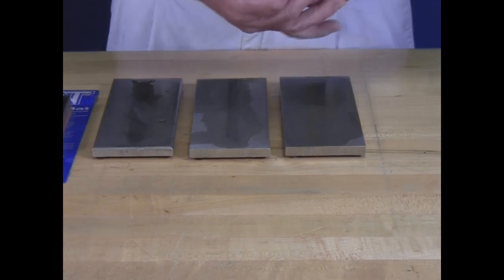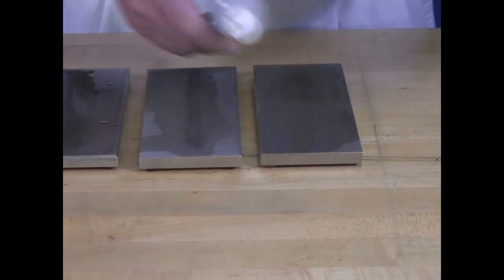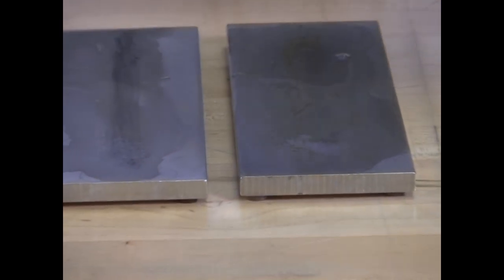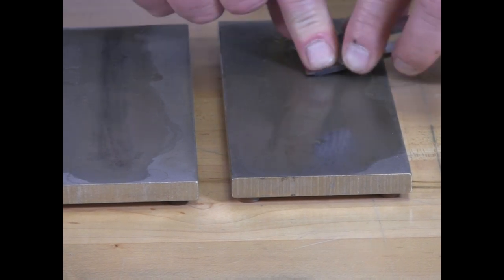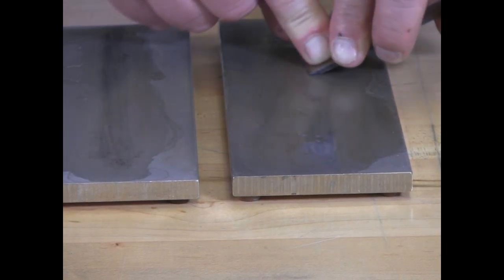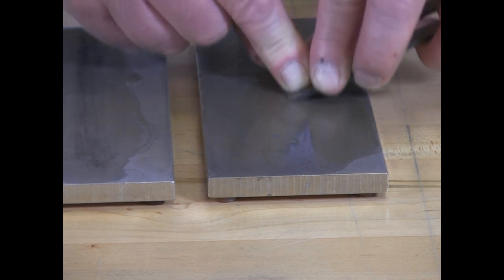Okay, now that we've got a polished backside, we can start working on the front bevel. I'm going to start with our coarse 45 micron, 325 diamond sharp. Roll this back and forth so you can feel when you're flat on the bevel.